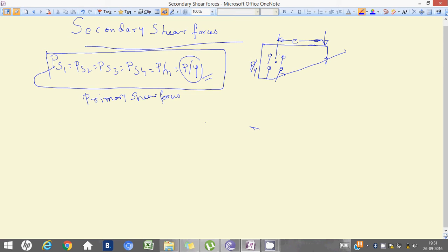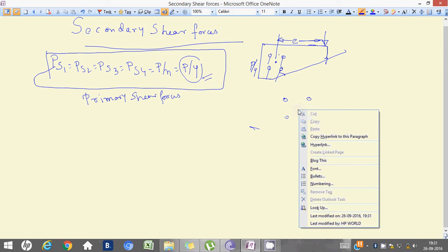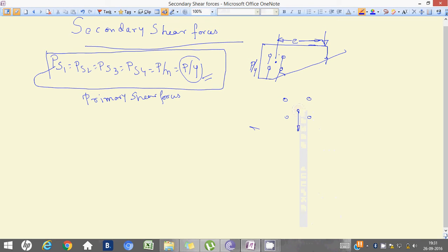Now, due to the shifting, what happens is that, at the CG, this p, there will be a turning moment M. That will be equal to p, that is the load applied, and the eccentricity e. And this has to be balanced.